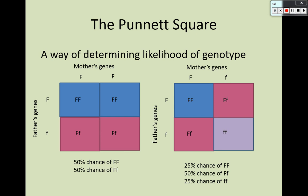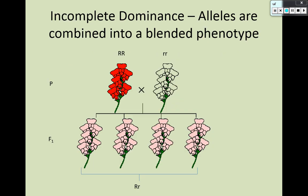Now I want to show you some cases of dominance in a heterozygous example that is not as simple as showing the dominant allele. The first kind is incomplete dominance. In this case, the alleles are combined into a blended phenotype, and this really only matters in the heterozygote.